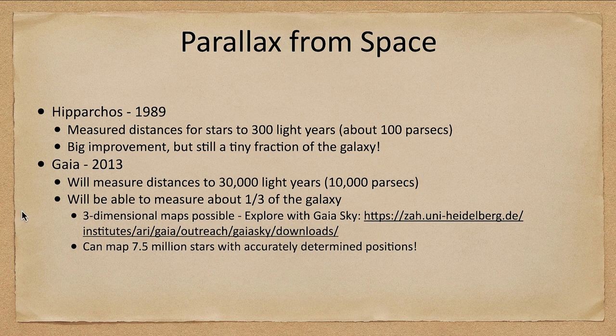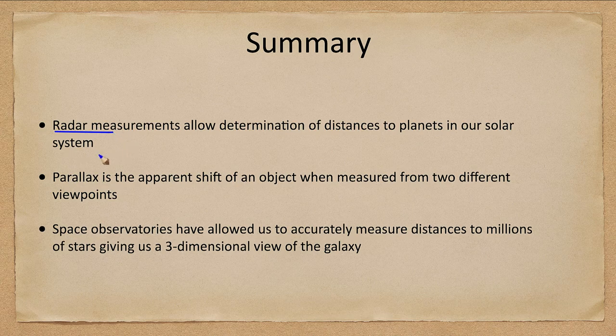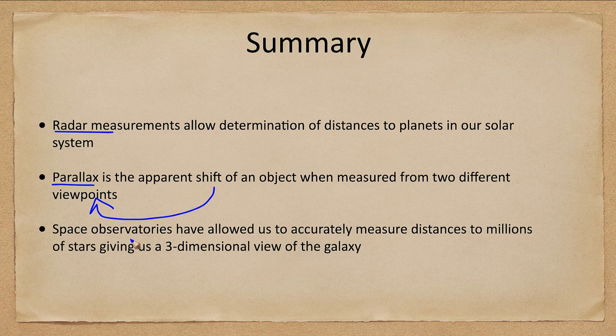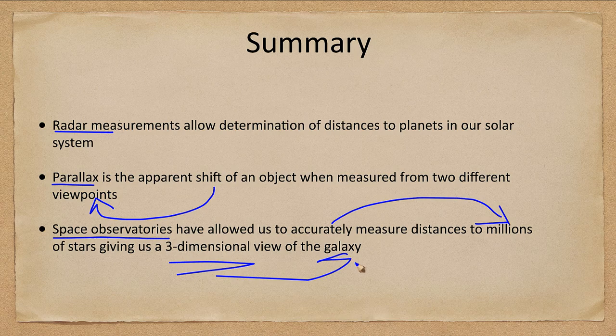So let's go ahead and finish up with our summary. We mentioned radar measurements, which work within our solar system but not beyond. And we looked at parallax, which is the shift of an object measured from two different viewpoints that allows us to determine the distance. And space observatories are now allowing us to accurately measure distances to millions of stars, giving us a three-dimensional view of the galaxy.